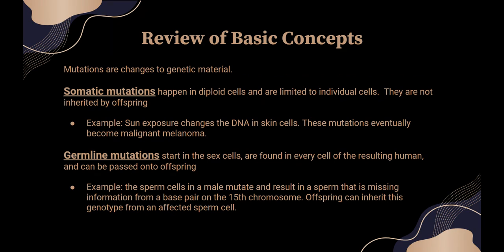Germline mutations start in the sex cells and then they're found in the cells of the offspring. The parent's genome is originally normal, and a change occurs during meiosis for an egg cell or a sperm cell. When that gamete combines with another gamete to form an offspring — a zygote — that change will be present in every cell in that offspring's body. For example, if we have a man of advanced paternal age, sometimes they have deletions or inversions of genetic material, and if that sperm combines with an egg, the offspring can inherit the genotype from that affected sperm cell.